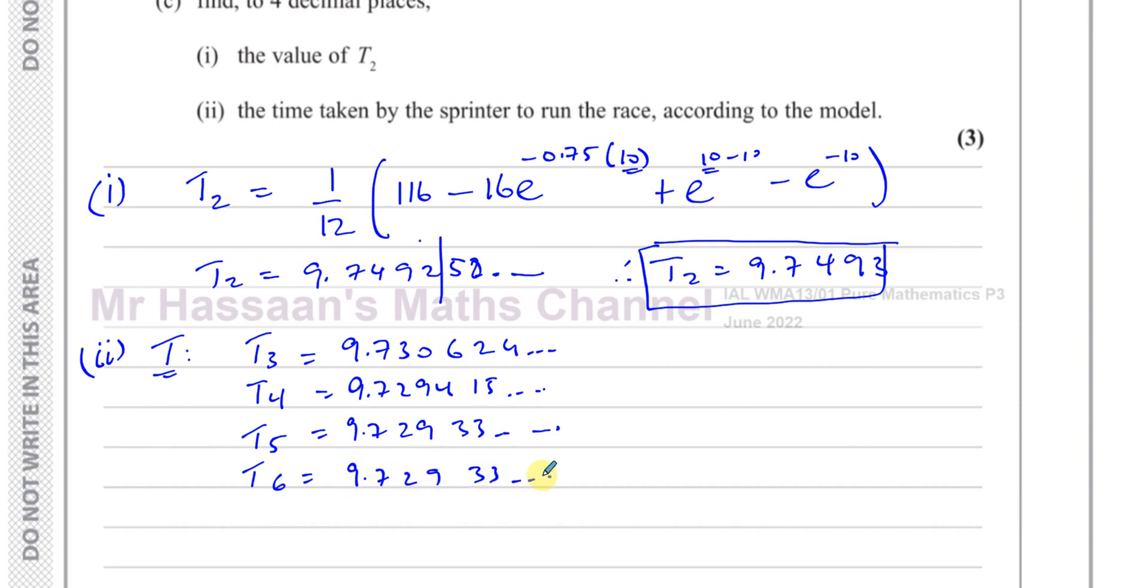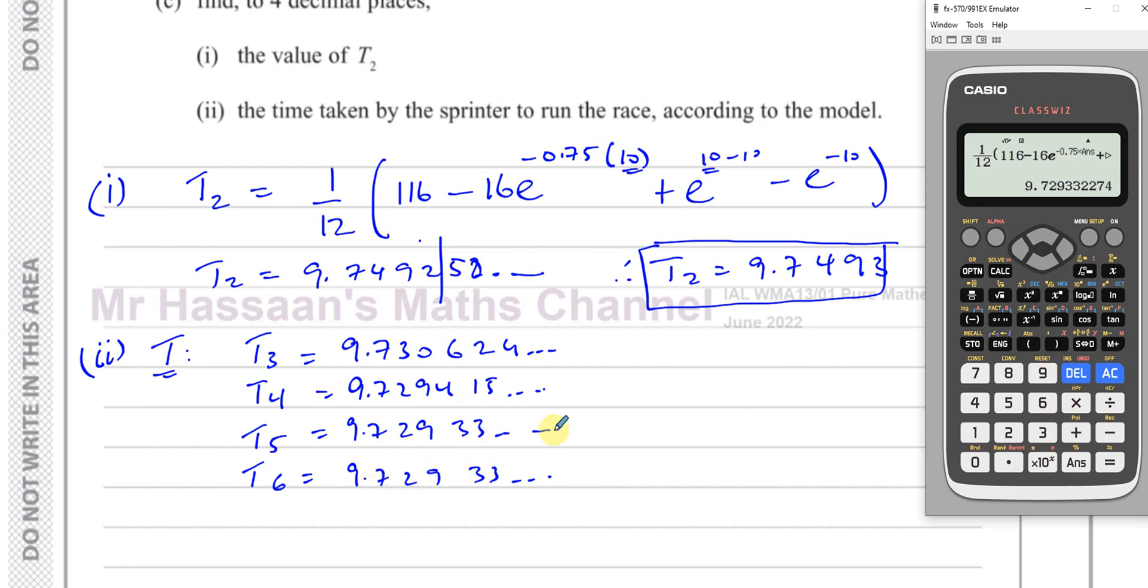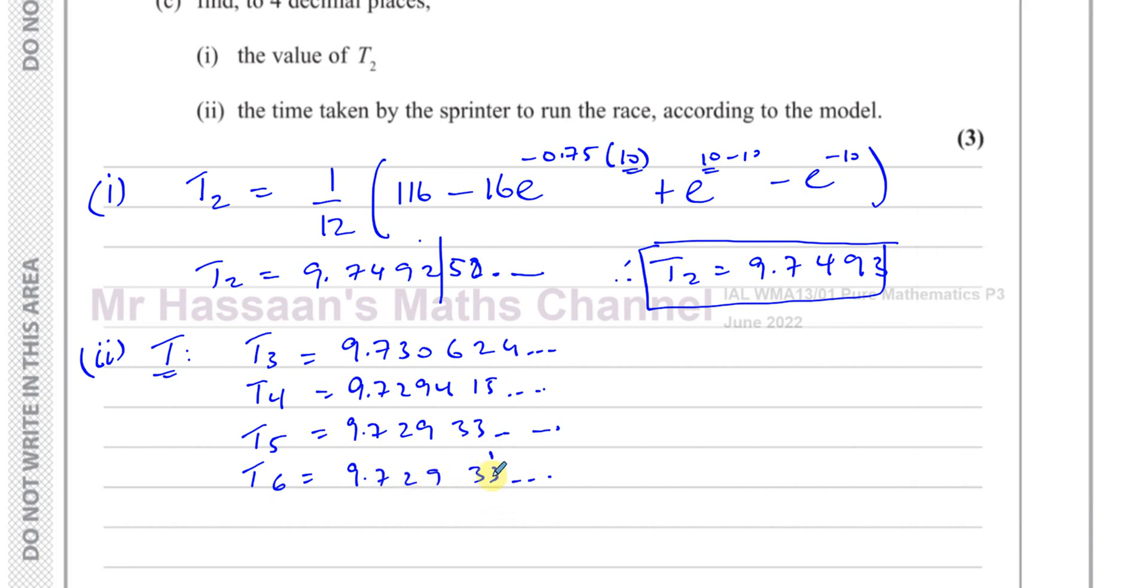So it's getting closer to a settled value. So I'll press equals again. And as you can see, it's starting to settle down. 9.72933 again. It's going to continue. The numbers at the end are being different, but we've got to round to 4 decimal places. If I keep pressing equals, you'll see it will stop. And you can see that it's settled here. You're going to end up with T is 9.7293 to 4 decimal places. And there we have the answer to part 2.